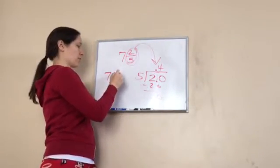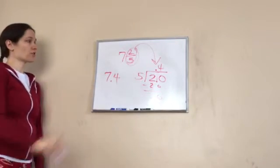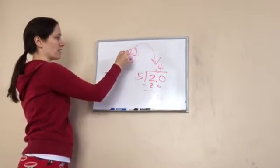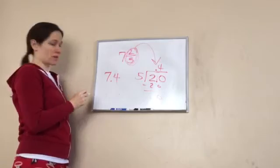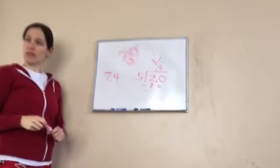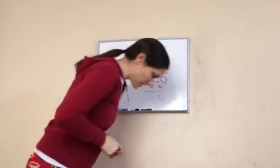7.4. 2 fifths is 0.4, so 7 and 2 fifths is 7.4. Got it? That is lesson 74.